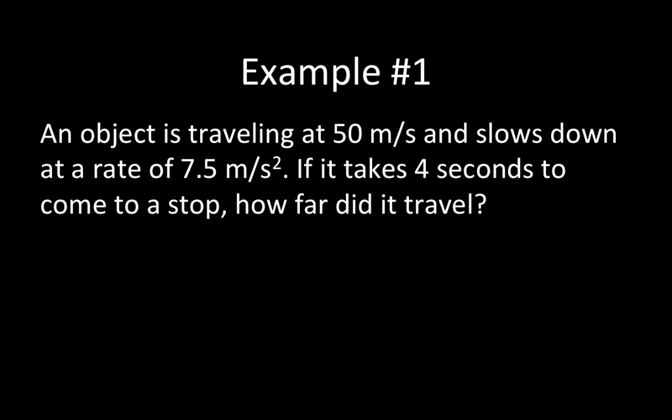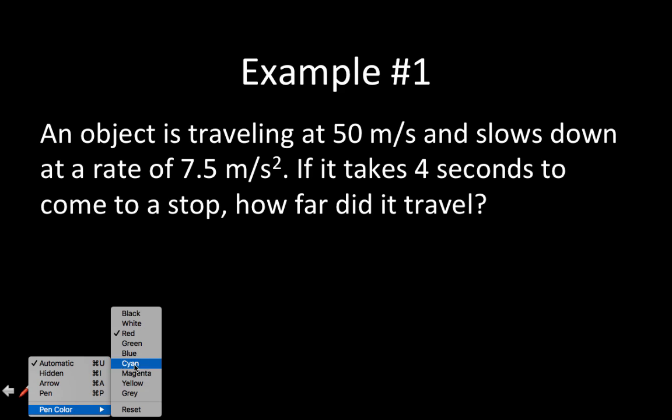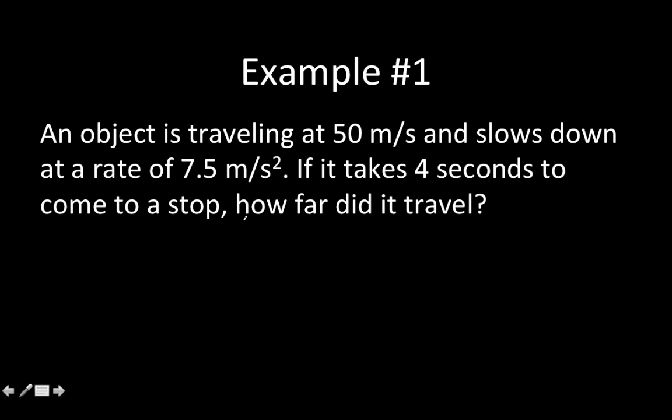We've got an object traveling at 50 meters per second and it starts slowing down at a rate of 7.5 meters per second squared. If it takes four seconds to come to a stop, how far did it travel? We're going to do this the exact same way as the other ones, but with a little twist on the acceleration. We want to make sure we identify what we're trying to find. We're trying to figure out how far it traveled, so we're looking for distance.